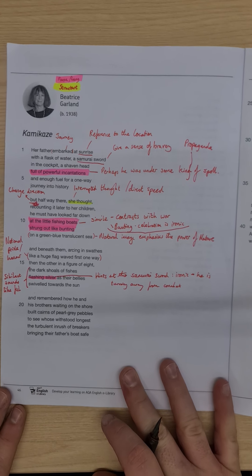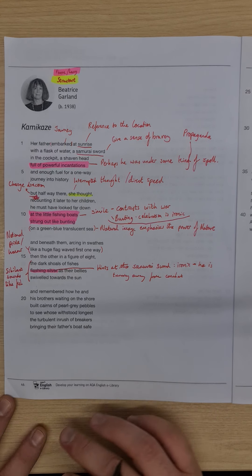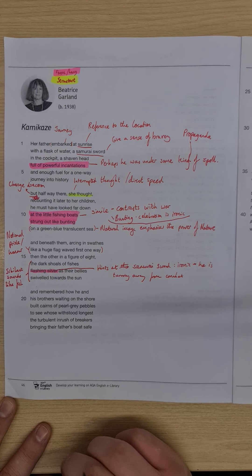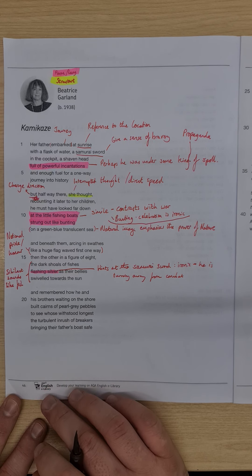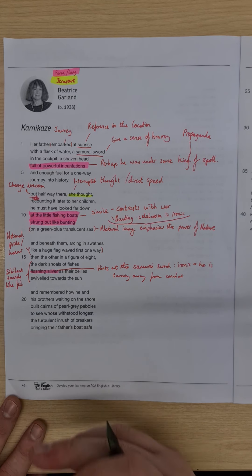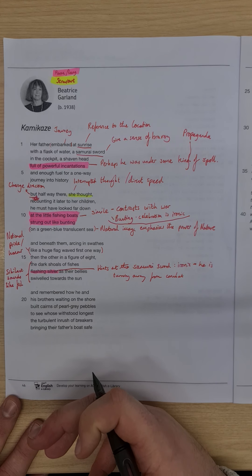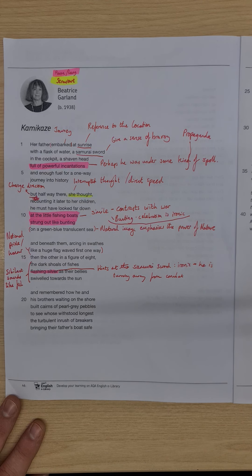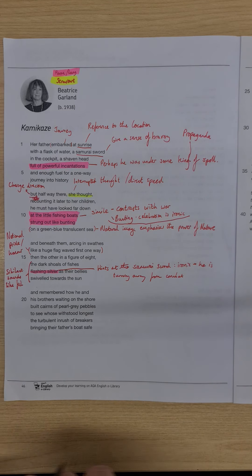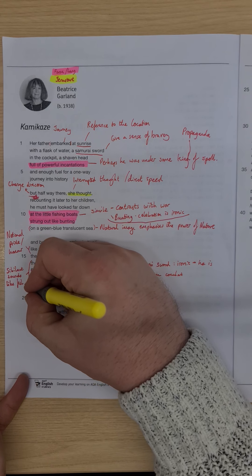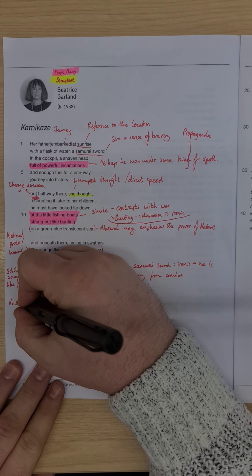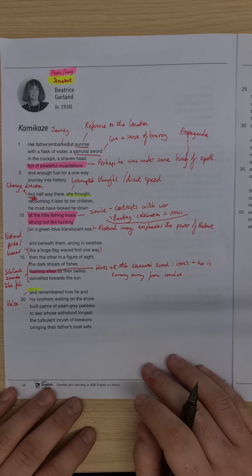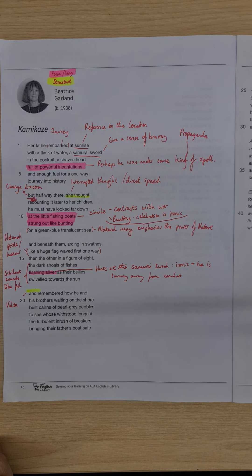Looking into the next stanza, and remembered how he and his brothers waiting on the shore built cairns of pearl grey pebbles, to see whose withstood longest the turbulent inrush of breakers, bringing their father's boat safe. You should be picking up some ideas here now that we're getting this theme of memory coming through, and this idea that we're switching the focus again. When we switch the focus of a poem, it's called a volta. It is possible to have more than one volta in a poem. Volta means a turning point within a poem.